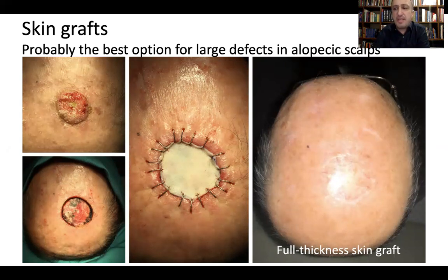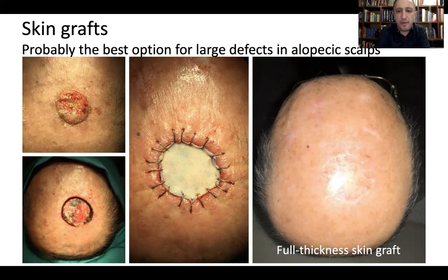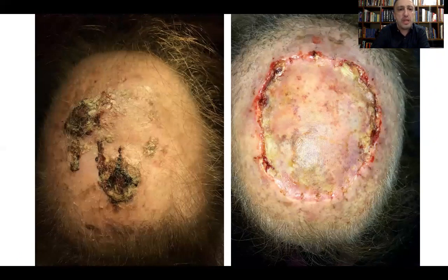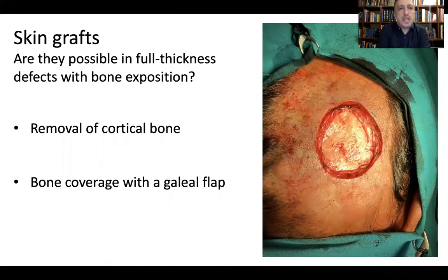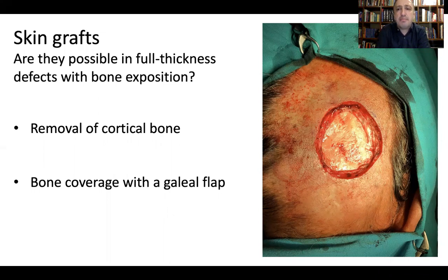Skin grafts are probably the best option for large defects, especially when talking about alopecic scalps. It is a simple procedure — we can apply a full-thickness skin graft to cover the area. However, we need to have galea or pericranium in order to provide vascular support to the graft; otherwise the graft will not survive. Even large defects may be covered with a graft when the patient has alopecia. But when the bone is exposed with no periosteum, there is no blood supply for the graft.